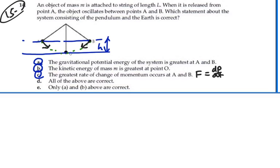Statement D: All of the above are correct. That's true. A, B, and C are correct. Statement E: Only A and B are correct. That's not true. So the best answer is D, all of the above are correct.